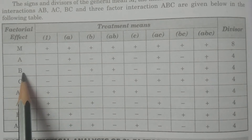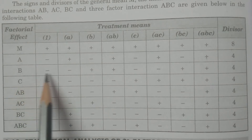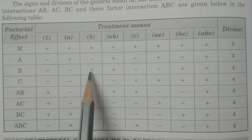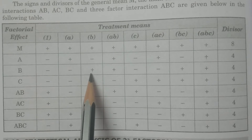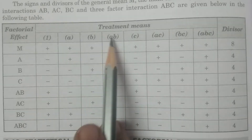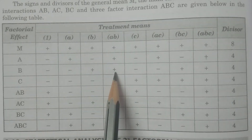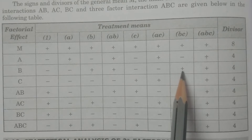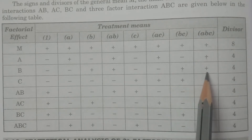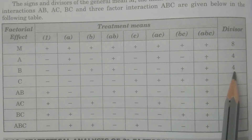Next, for main effect B, all treatments containing B have the positive sign — that is B, AB, BC, and ABC are plus, and the remaining are minus. Divisor is 4.